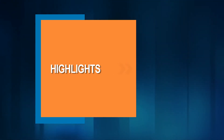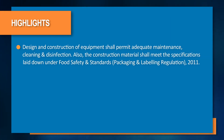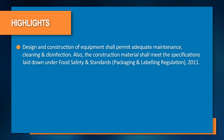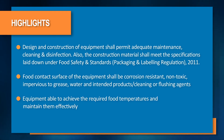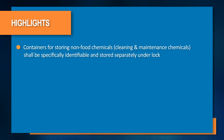The major takeaway points from this video are: the design and construction of equipment shall permit adequate maintenance, cleaning and disinfection. The construction material shall meet the specifications laid down under Food Safety and Standards Packaging and Labeling Regulation 2011. The food contact surface of the equipment shall be corrosion resistant, non-toxic, impervious to grease, water and intended products, as well as to cleaning or flushing agents. Equipment shall be able to achieve the required food temperatures and maintain them effectively.